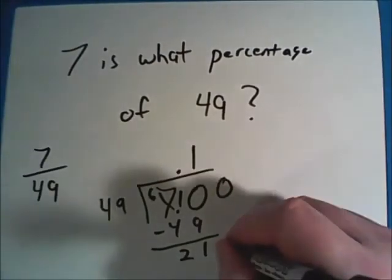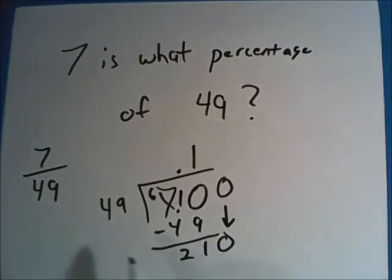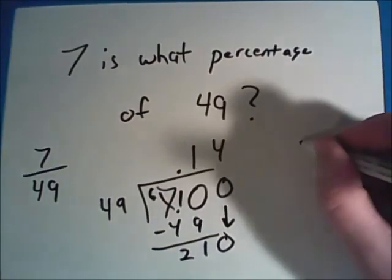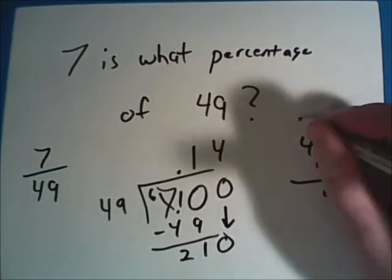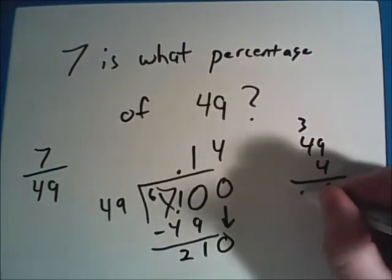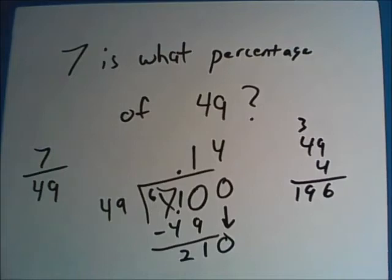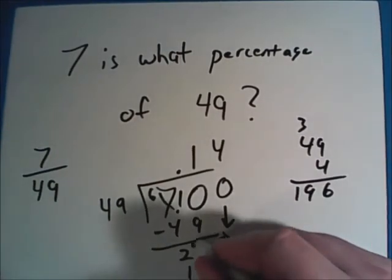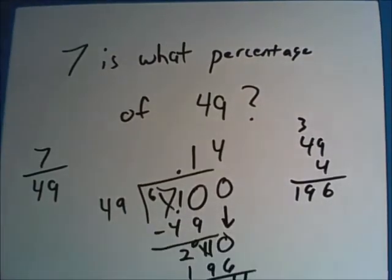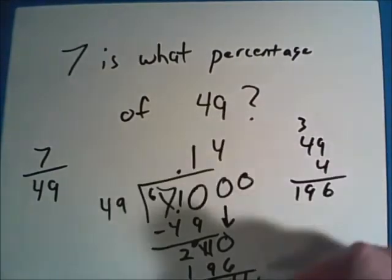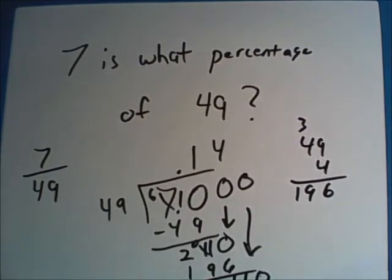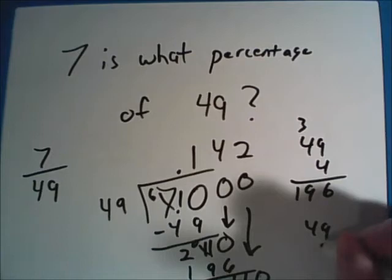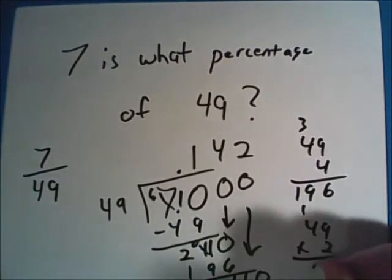Put another 0 and bring it down. So now it's 49 into 210. This should go 4 times because 49 times 4 should get us 196. And we can subtract this and get 14. We'll just bring down one more 0 so that 49 goes into 140 twice with 49 times 2 being 98.